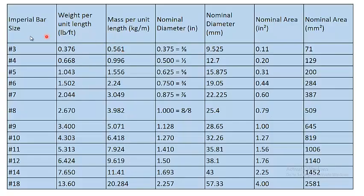First, look at this table showing imperial bar sizes in the FPS system. A number 3 bar means 3 by 8 inches. Number 4 means 4 by 8 inches, or half an inch. Number 5 means 5 by 8 inches. Number 8 means 8 by 8, which equals 1 inch. Number 9 means 9 divided by 8, and so on.